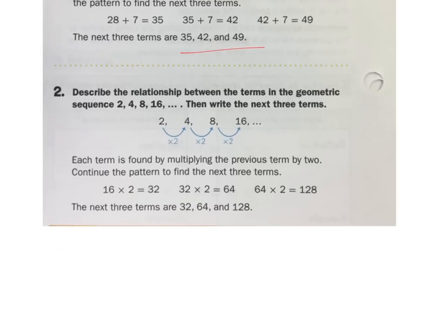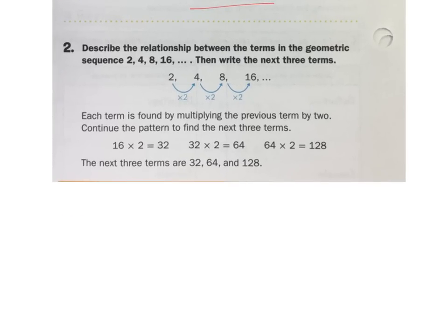Now let's look at number 2. Describe the relationship between the terms in the geometric sequence: 2, 4, 8, 16. Now geometric tells me we're multiplying. So what do we multiply each time to get to the next number? From 2 to 4, you times it by 2. 4 to 8, you times it by 2. 8 to 16, you times it by 2. If I want the next three terms, this times 2 is going to give me 32, and then that times 2 is going to give me 64, that times 2 is 128, and you keep going and going and going. So that's an arithmetic sequence and a geometric sequence.